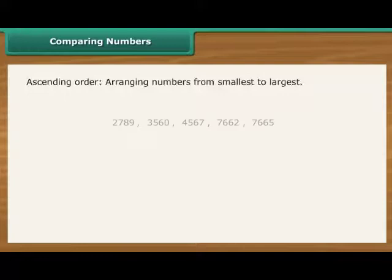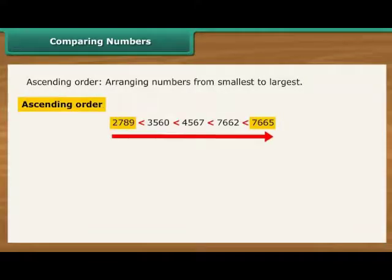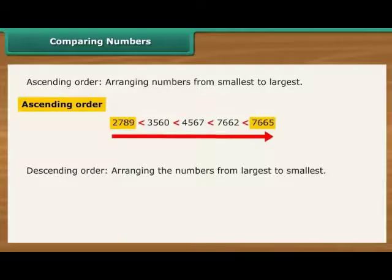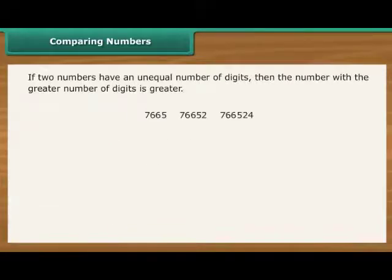The arrangement of numbers from the smallest to the largest is called ascending order. The arrangement of numbers from the largest to the smallest is called descending order. If two numbers have an unequal number of digits, then the number with a greater number of digits is greater.